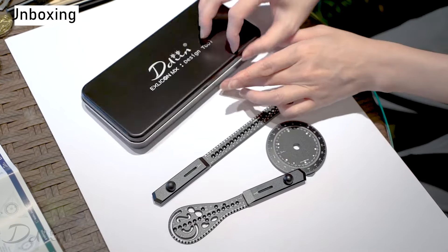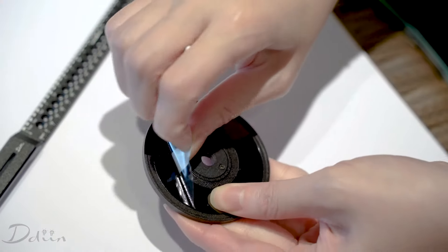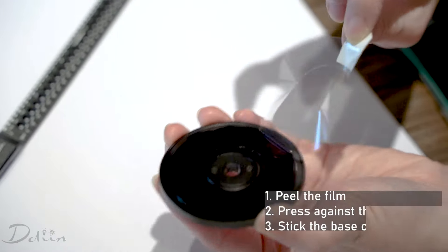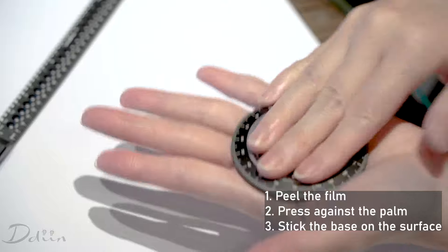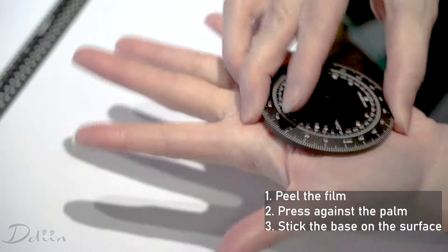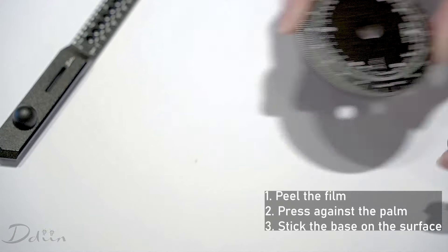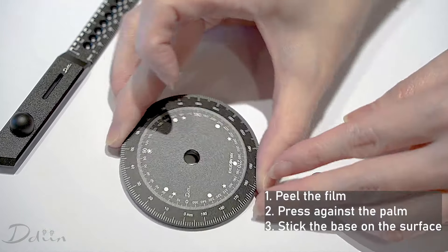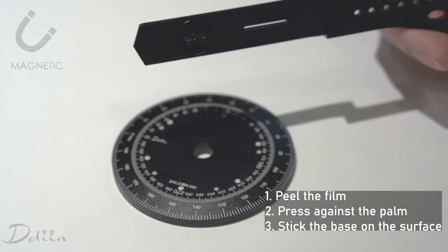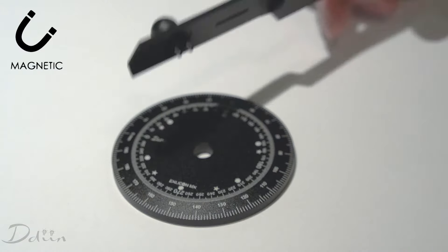First, let's prepare the base. Peel off the film on the back of the base and press it against your palm to reduce its stickiness. Mark a center point and align the base hole to the mark. Stick the base and attach a magnetic wing to it.